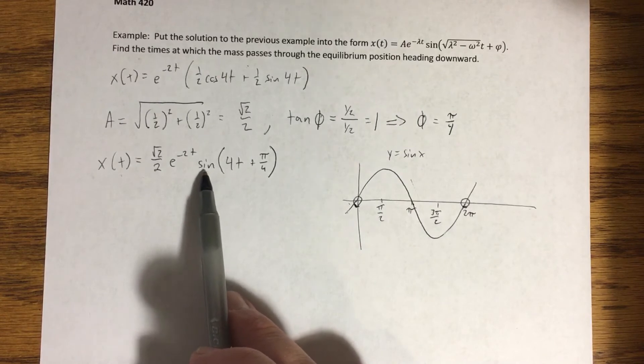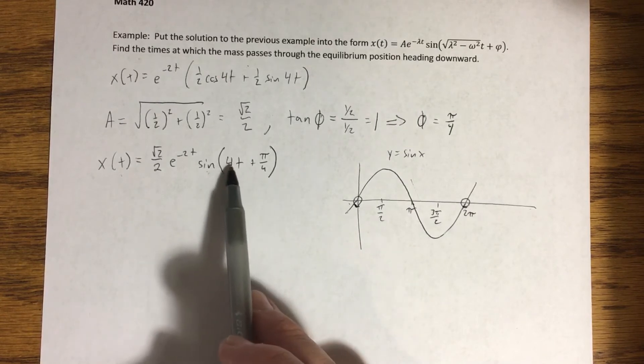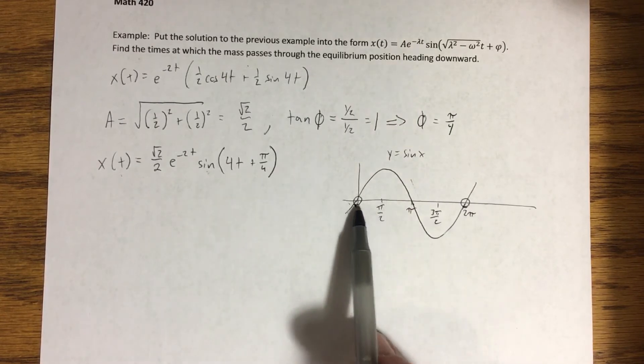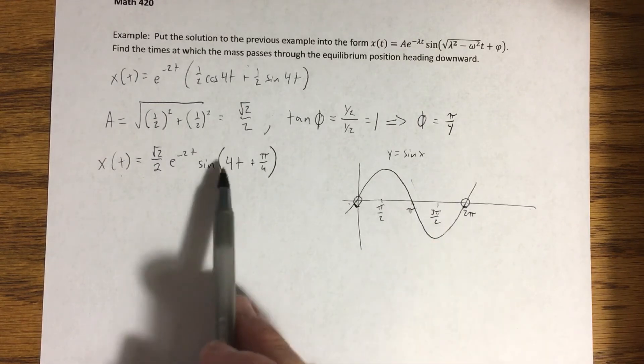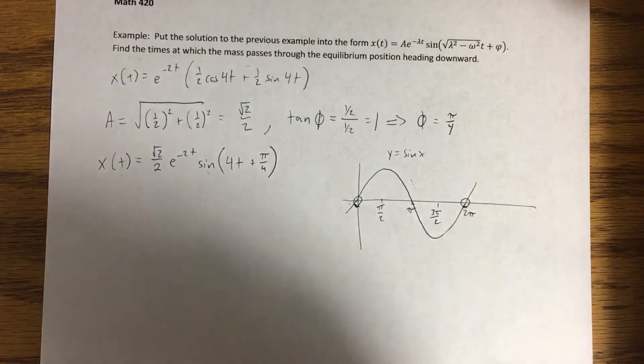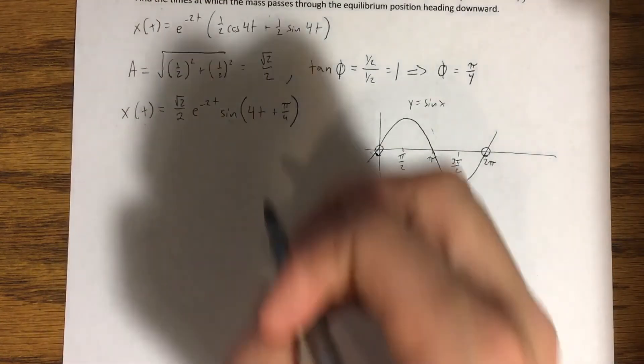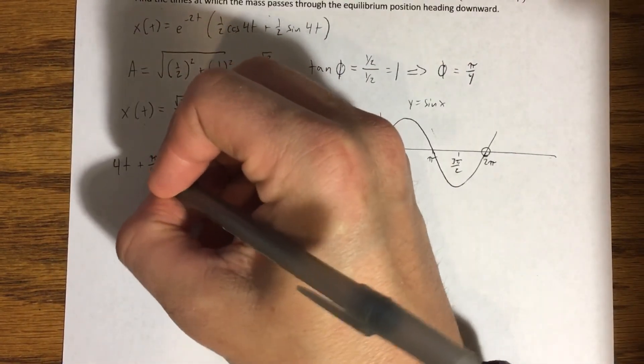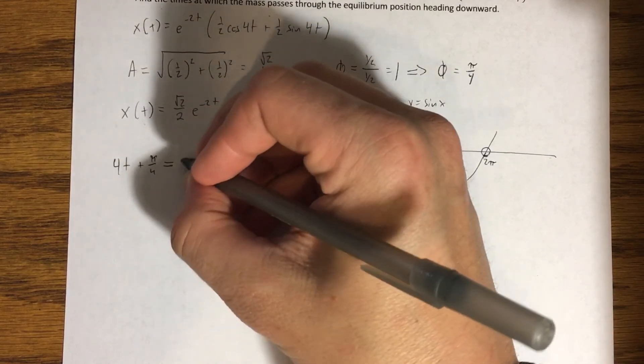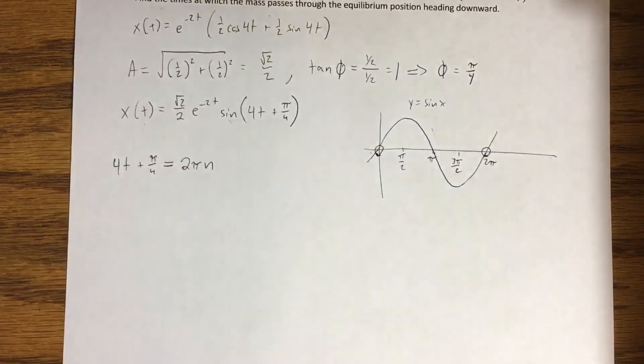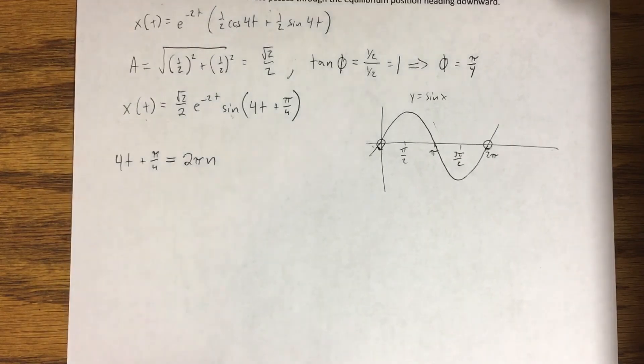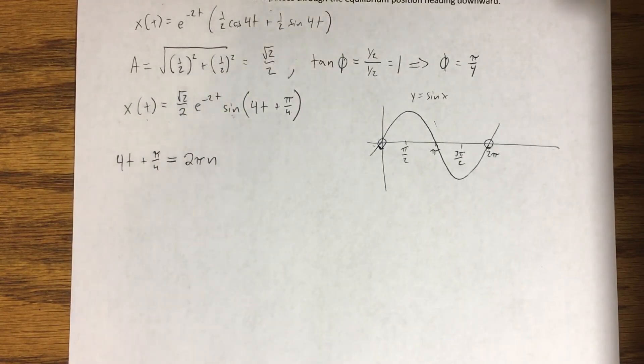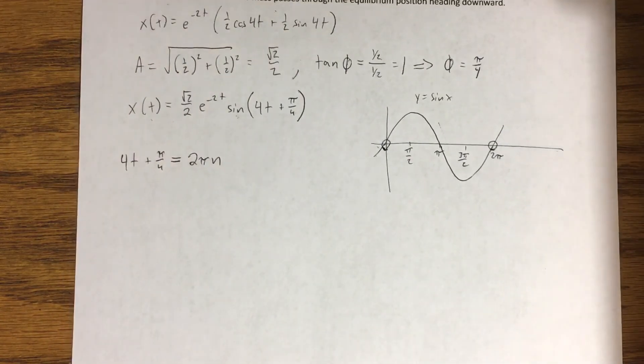Well, let me take a look at my sine function here. I need the input on this sine function to equal a multiple of two pi in order for this thing to be passing through equilibrium heading downward. So I take the argument 4t plus pi over four, and I set that equal to 2πn, n giving me the multiple, any multiple of two pi. n is just some integer, and then we're going to put a restriction on it in a minute.